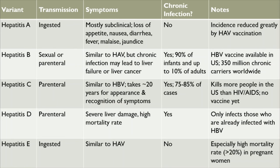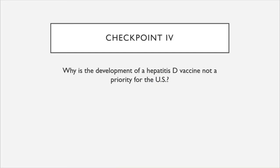Checkpoint: We don't have a vaccine for Hepatitis D, despite its very high mortality rate. Why is the development of a Hepatitis D vaccine not a priority for the U.S.?